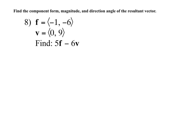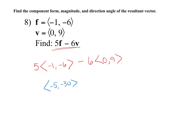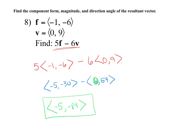For finding the component form, magnitude, and direction of a resultant vector, use order of operations. Here: 5 times vector F minus 6 times vector V. Distribute the scalars — so negative 5, negative 30, minus 6 and 54. Subtracting gives component form of negative 5 and negative 84. Magnitude is the square root of those two values squared, which is approximately 81.1.